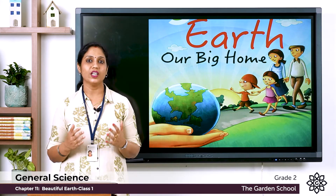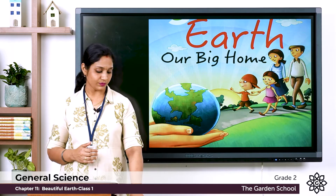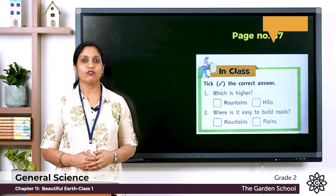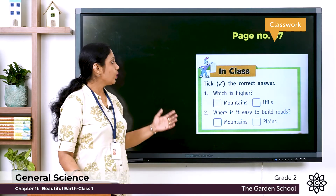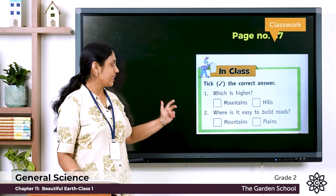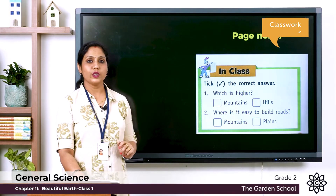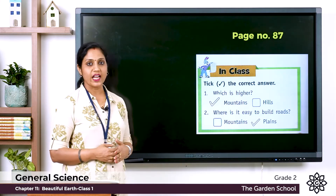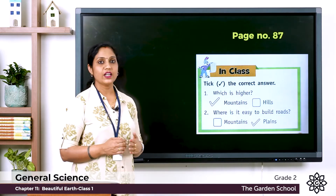That is what we learned in Chapter: Beautiful Earth. Now let's move on to exercises. Open your textbook to page 87. The first exercise says 'Tick the correct answer.' Question one: which is higher — mountains or hills? The answer is mountains. Question two: where is it easy to build roads — on mountains or plains? The answer is plains.